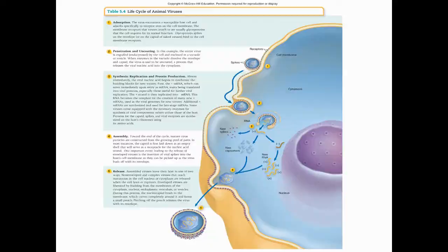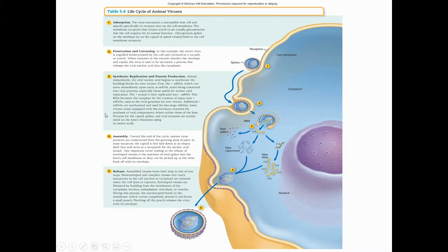Table 5.4 in the text has the life cycle of animal viruses — those steps we did in our discussion: adsorption, penetration, and uncoating; synthesis; assembly and maturation; and then release. The differences between enveloped and naked viruses appear in the first step, adsorption, and in the last step, release. The synthesis step — what we're going to build — depends entirely on what nucleic acid the virus comes into the cell with.